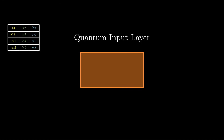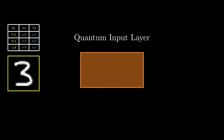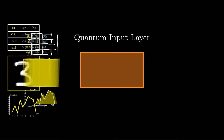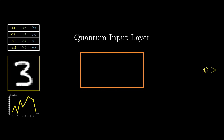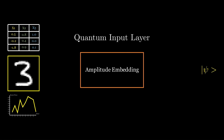For a quantum input layer, you may have tabular data, image data, or time series data. Using something called data embedding, it converts classical input data into a quantum state. This data embedding technique can be, for example, binary embedding, amplitude embedding, or angle embedding.